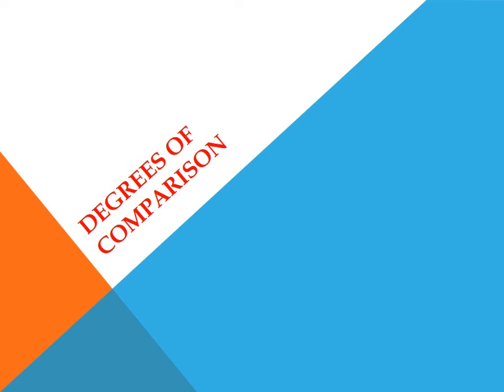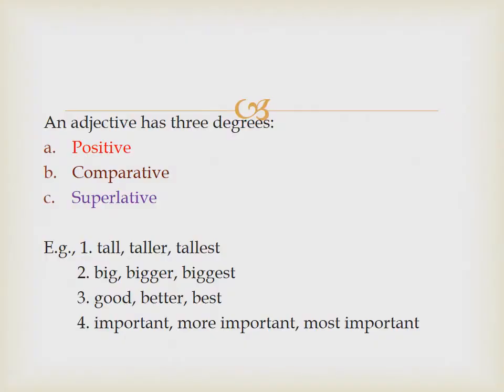Degrees of comparison. An adjective, as you know, is a word that describes a noun — a word that qualifies a noun. In other words, it tells something about a noun. We are familiar with a lot of adjectives in English. An adjective has three different forms or degrees, known as positive, comparative, and superlative.